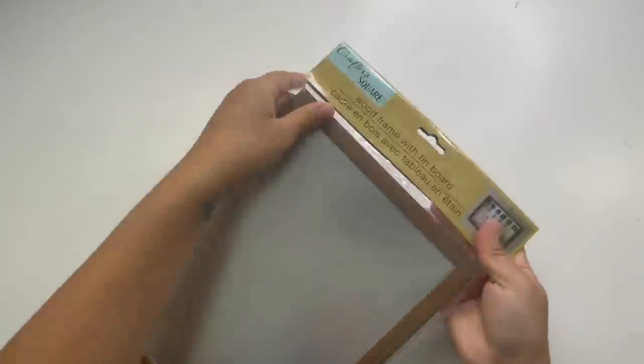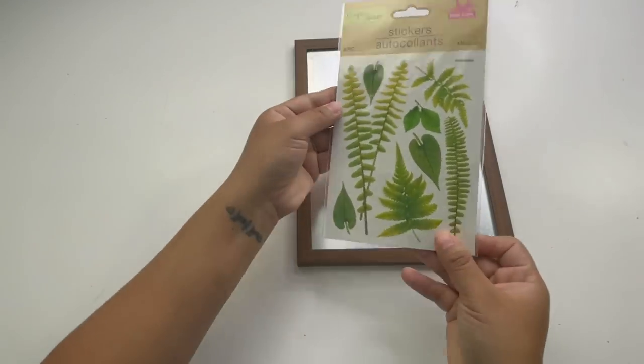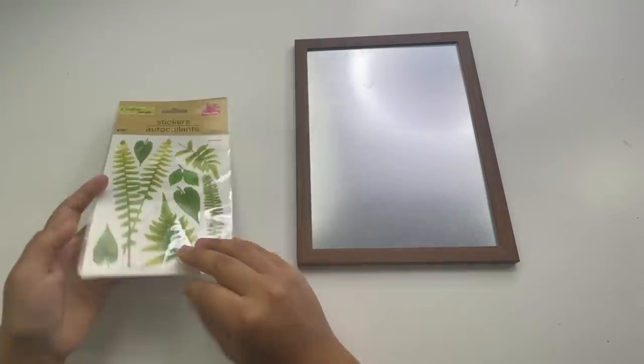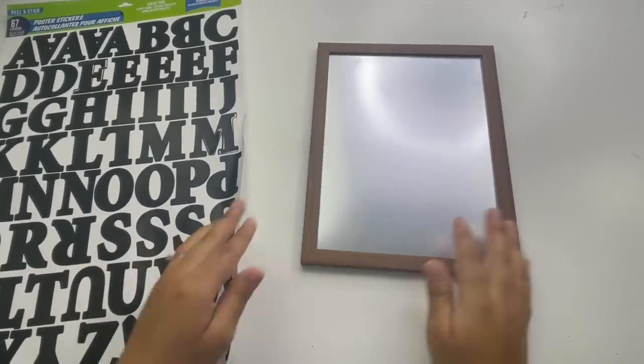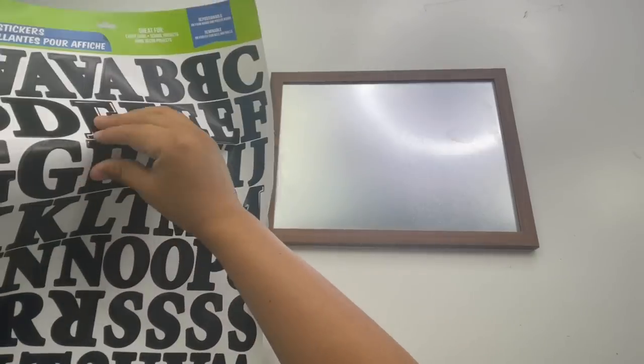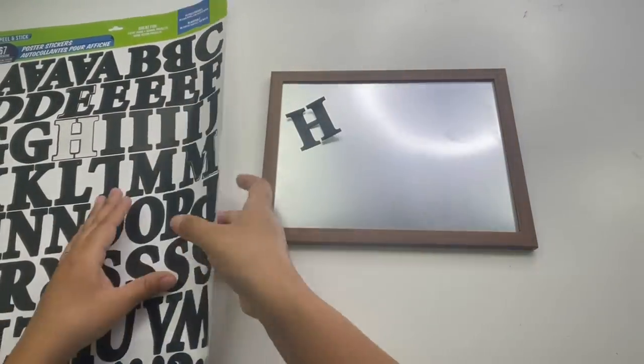Starting with my first project from the Dollar Tree, I'm going to use one of these wood frames with tip boards. This is new to Dollar Tree, or at least new to me. I'm also using some stickers and some poster sticker letters. You can use this vertical or horizontal. I will be adding the word home and underneath that I will be adding some of the leaf stickers.